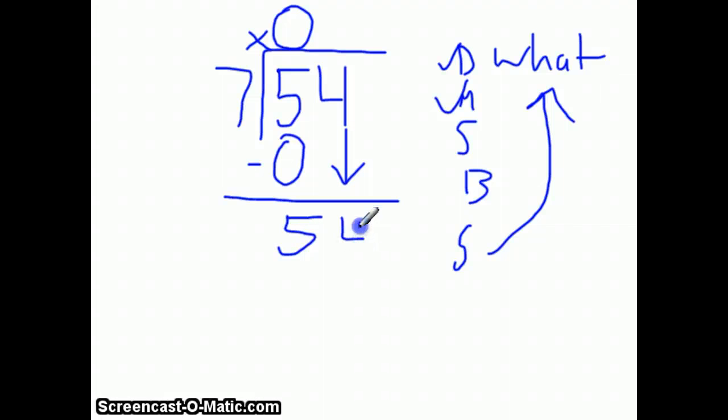Now a big mistake I see a lot of students making is they'll put a 0 there, because they're so used to putting 0s. But you really have to subtract, because 0 times 7 equals 0. So when you subtracted 5 minus 0, you're going to get 5. Now my next question, I'm at, okay, so I subtracted. I just brought down.